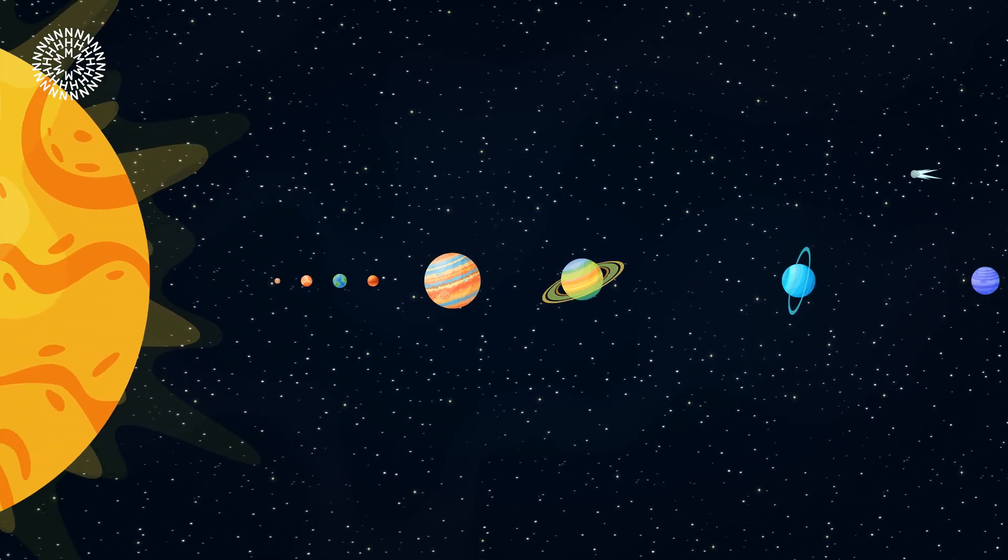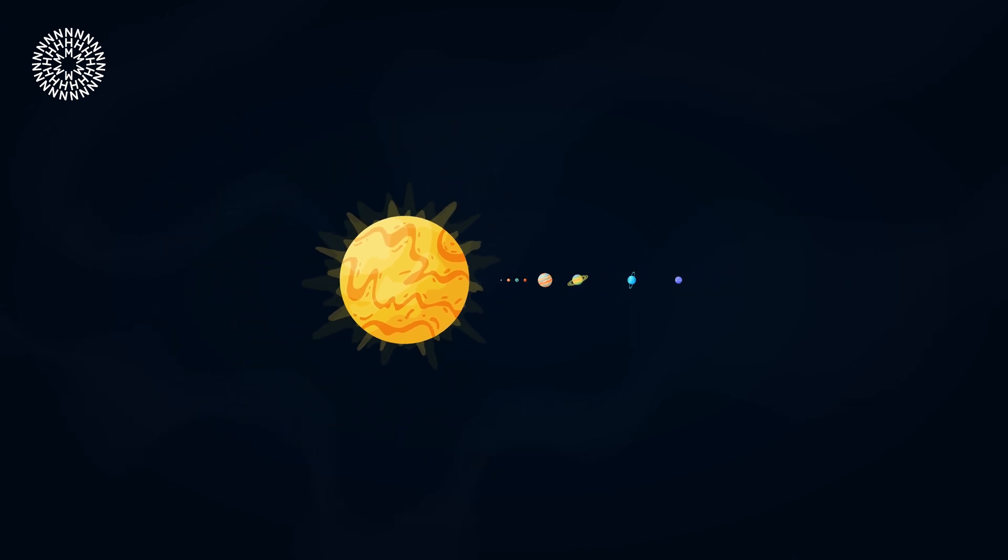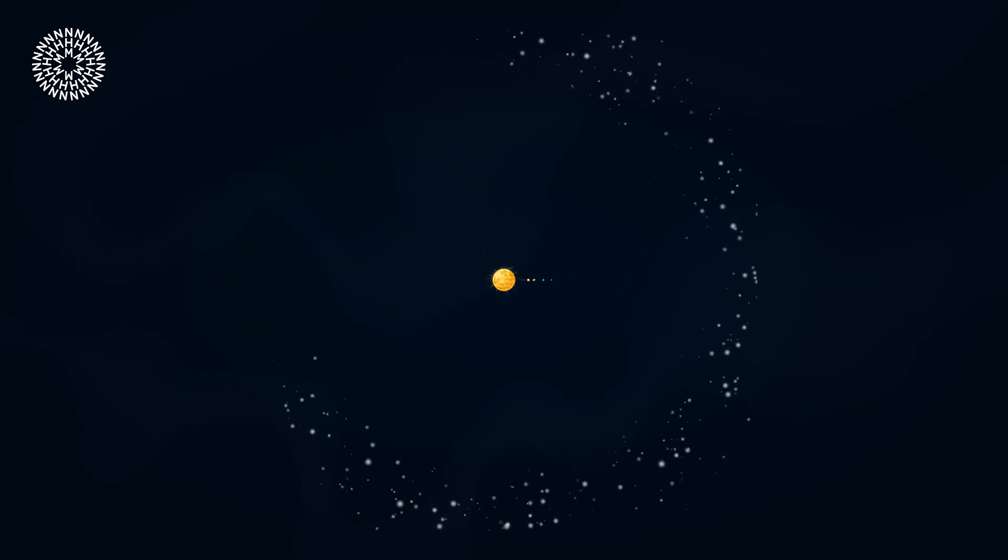These objects come from a spherical cloud that's billions of kilometres outside our solar system, known as the Oort Cloud.